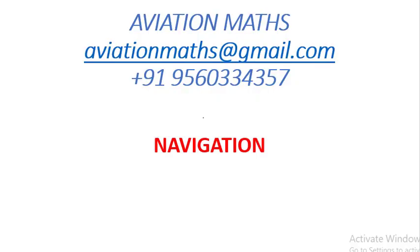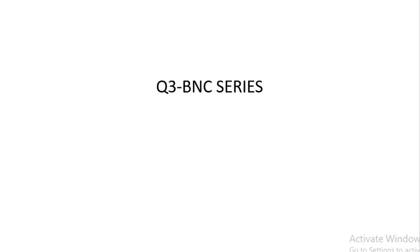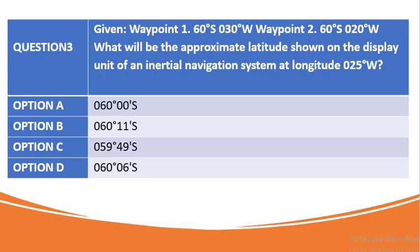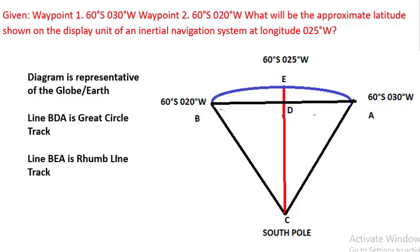Hello everyone, welcome once again to Aviation Math Classes. Today we shall have a look at another navigation mathematical problem — Question 3 in the BNC series. The question states that given waypoint 1 at 60 degrees south latitude, 30 degrees west longitude, and waypoint 2 at 60 degrees south latitude and 20 degrees west longitude, what will be the approximate latitude shown on the display unit of an inertial navigation system at longitude 25 degrees west?